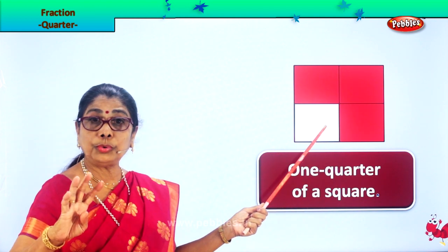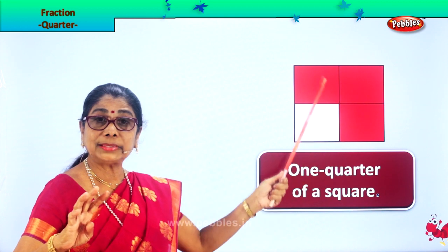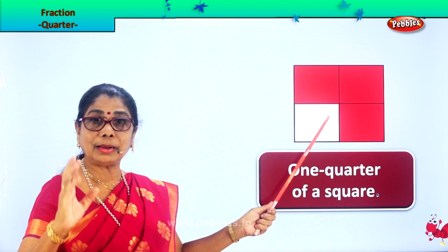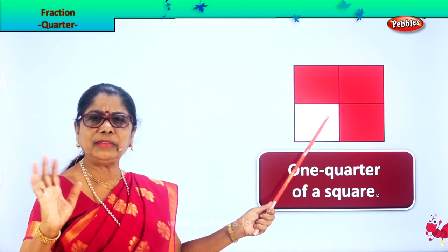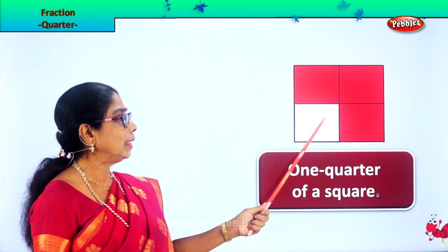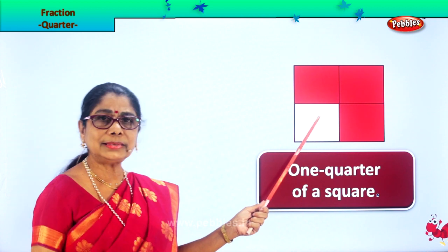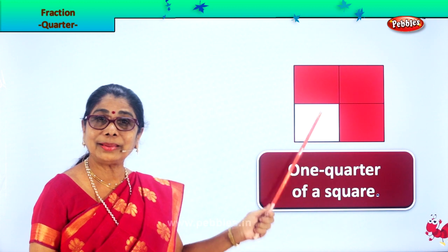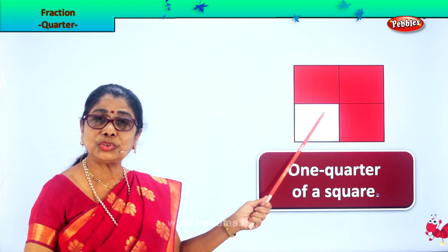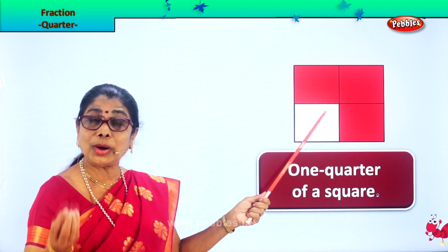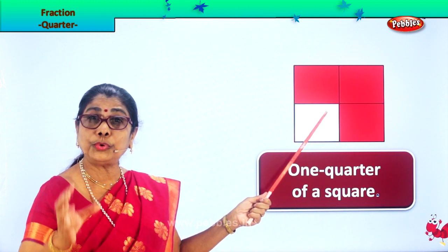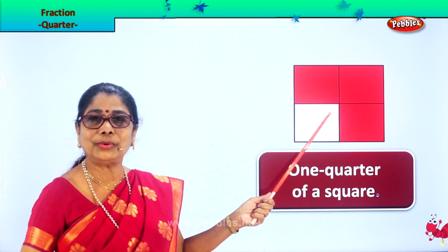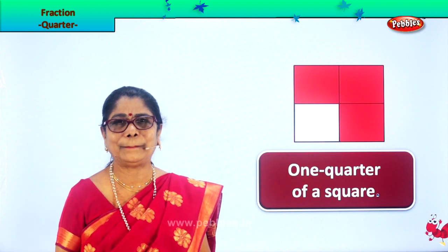All four bits are equally cut. So equally we have divided the square. This is called one quarter of a square. Now you understood what is the meaning of one quarter — that is one by four of a whole. Very good. Let's take another shape.